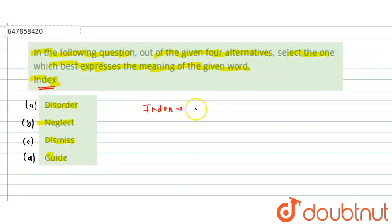So index is basically an alphabetical list of names, or the content present in a book.